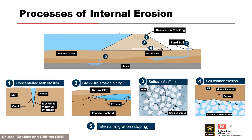A lexicon or terminology has developed over the years because there have been so many issues associated with internal erosion. Many different terms are used in the literature and even in the federal agencies. The general processes to consider are: concentrated leak erosion, backward erosion piping, internal instability suffusion or suffosion, soil contact erosion, and internal migration or stoping. Both concentrated leak erosion and soil contact erosion are forms of scour. Four of these processes are the same as in ICOLD Bulletin 164, with internal migration being added by the federal agencies.